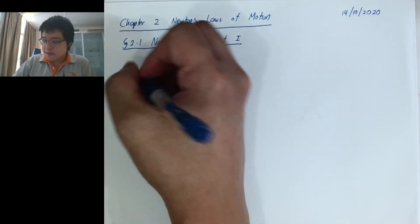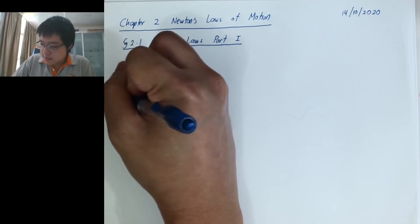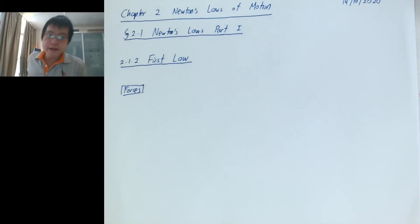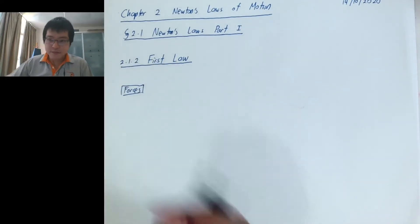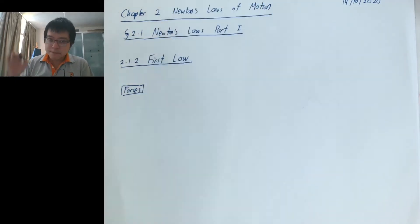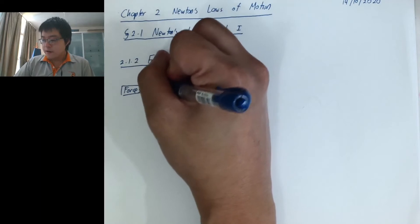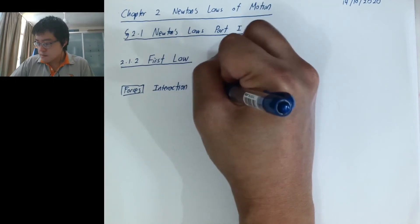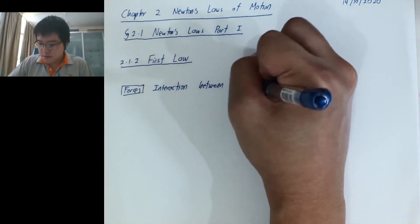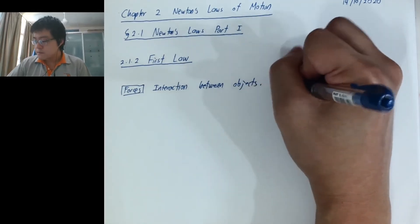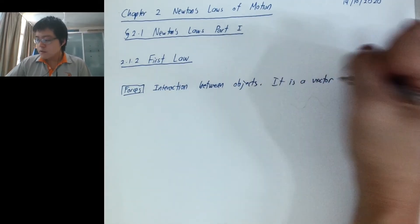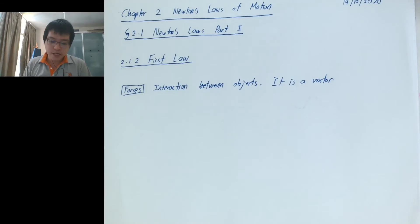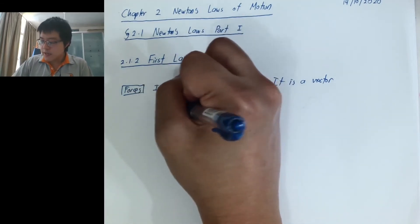Newton's law is all about forces. What is a force? Force is — the simple way to define it — the interaction between objects. And it is a vector, which means if you want to say what a force is, you must give the magnitude and direction. Otherwise you write it in vector notation.